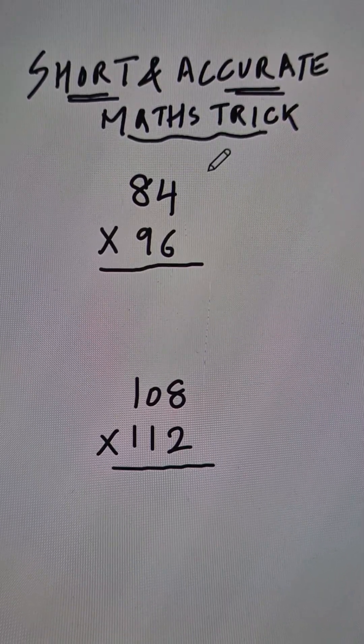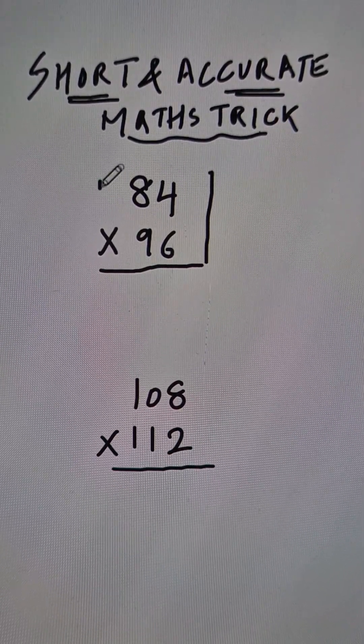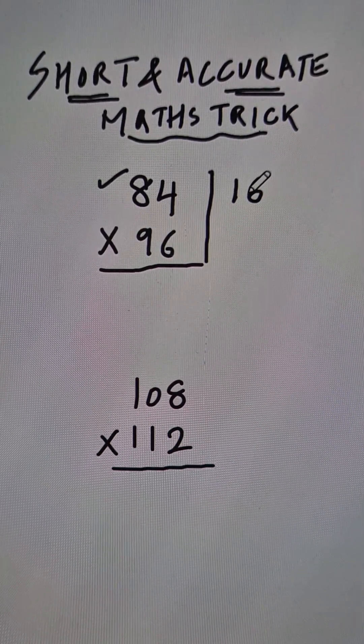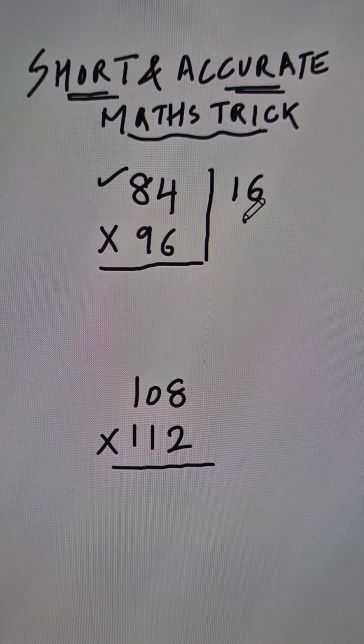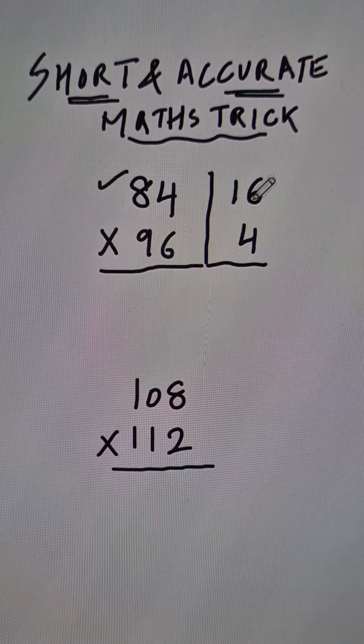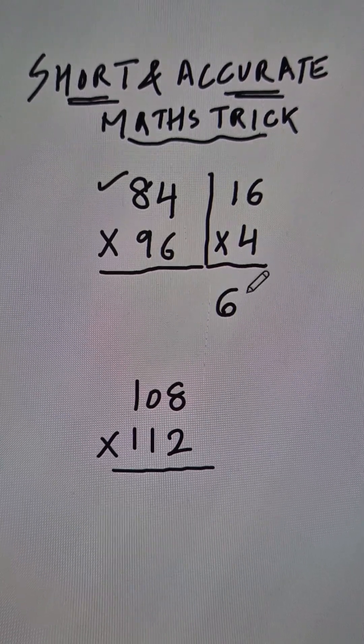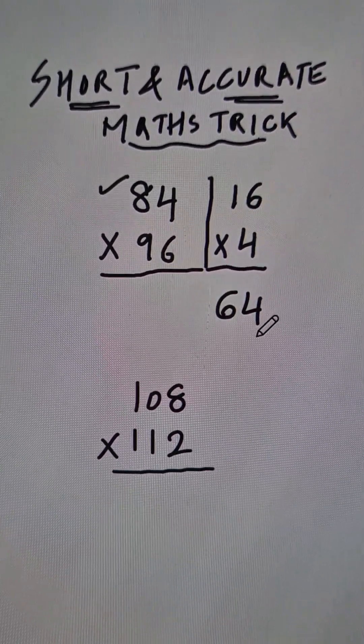Let's multiply 84 and 96. 84 is 16 less than 100 and 96 is 4 less than 100. So when you multiply 16 and 4, you get 64, and these are the last two digits of your answer.